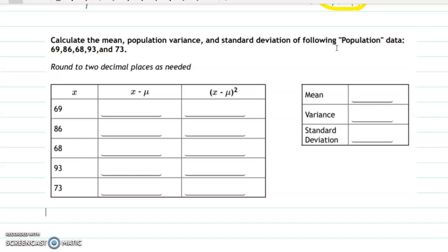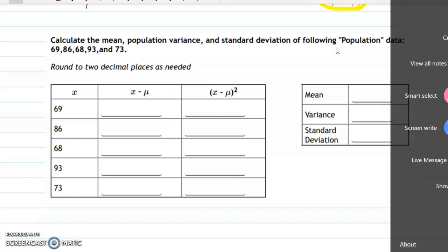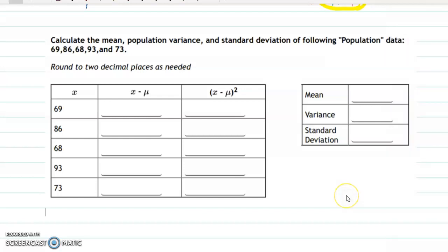Last time we did sample data and defined the mean, variance, and standard deviation. This time we will do the population. That's the only difference here. You need to know the difference between population and sample. Do you know what population means? Yes, the population means entire data. So whatever data group you choose, you are counting everything. That's the population.